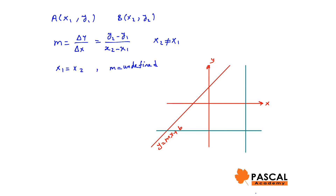y equals mx plus b is the slope-intercept equation of the line.